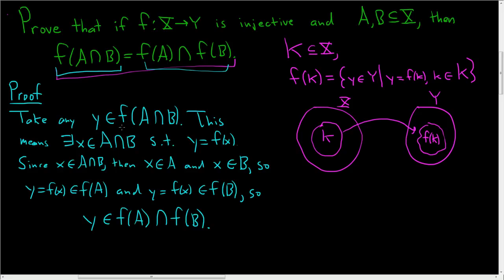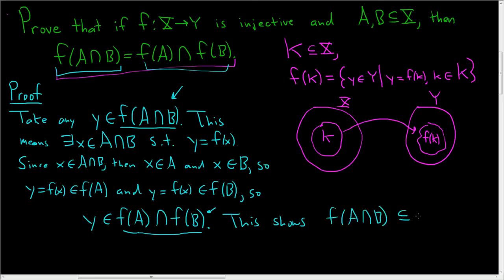So we started with Y in this set and we showed it was in this set, so that shows that this set is a subset of this set. This shows that F of A intersection B is a subset of F of A intersection F of B. So one down, one to go. We didn't use the fact that it was injective — I probably should have written down: suppose this function is an injection, and suppose that these are subsets of X.